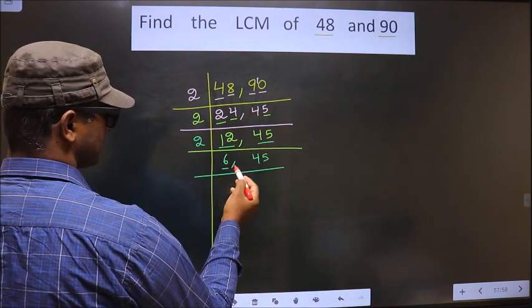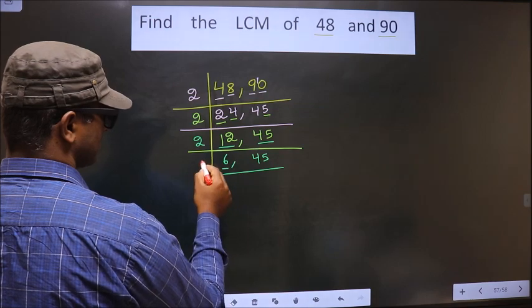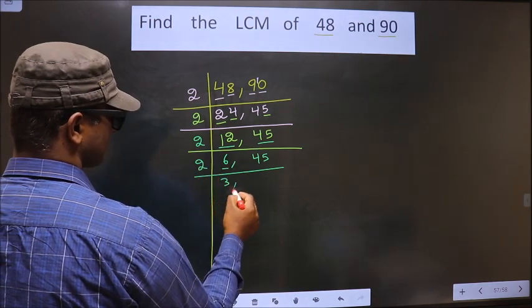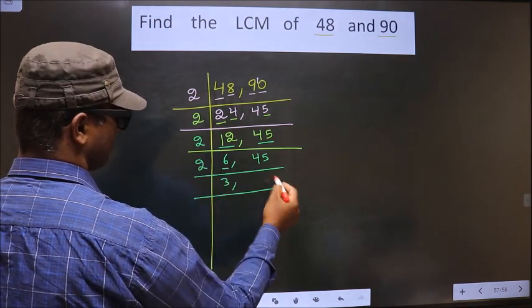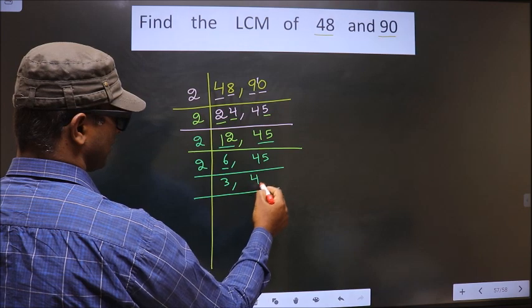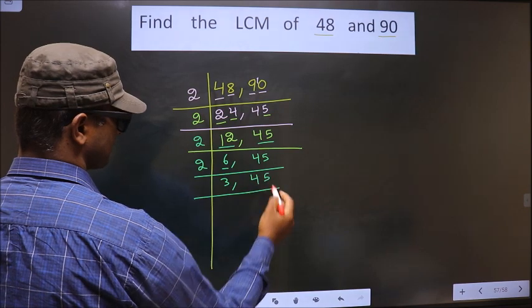Here we have 6. 6 is nothing but 2 times 3 is 6. 45 is not divisible by 2, so you write it down as it is.